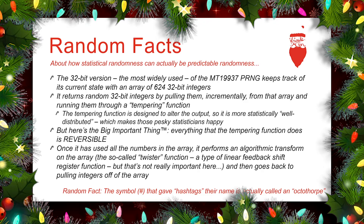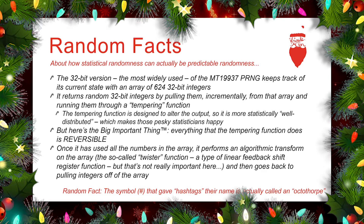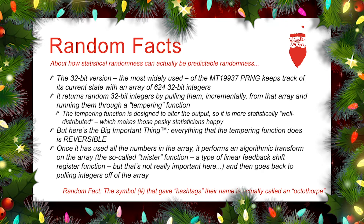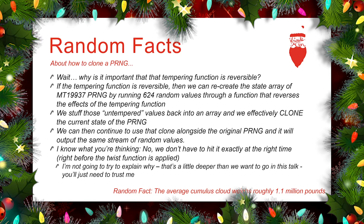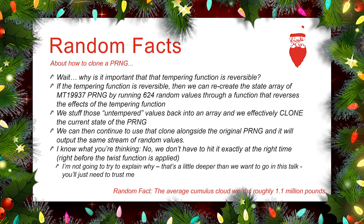Once it's gone through all of those 624 numbers and pushed them all out through the tempering function, it then uses a different function called the twister function, which is actually a linear feedback shift register function. It goes back to then pulling numbers off of that array and pushing them out through the tempering function to the user. If the tempering function is reversible, we have the potential to recreate that state array within the MT19937 pseudo-random number generator, simply by taking the last 624 random values, running them through a function that reverses the tempering function, and stuffing those untempered values back into an array of our own.